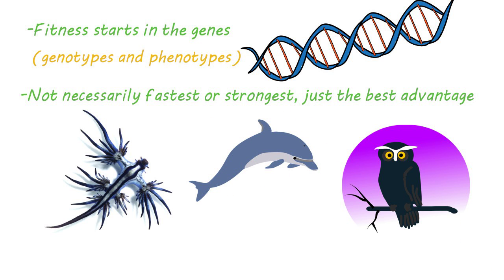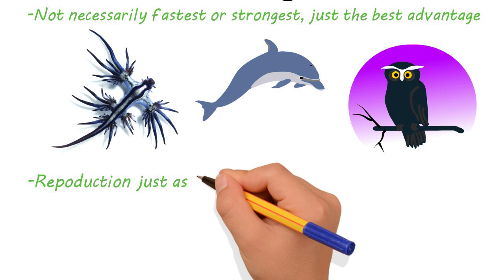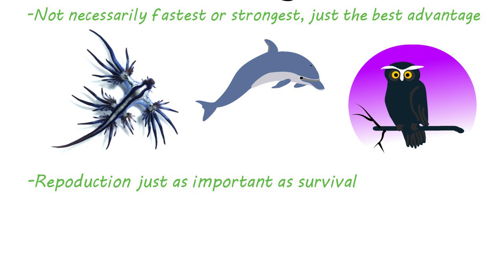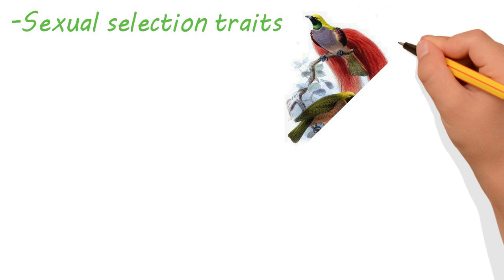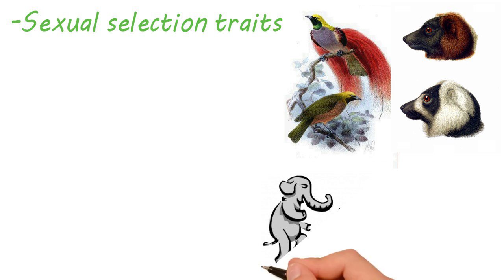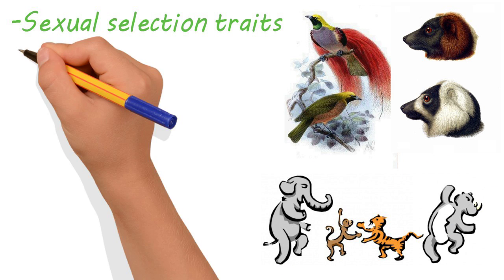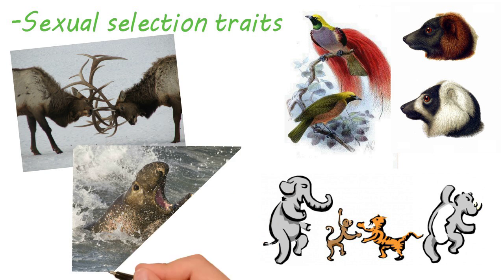But this is only half the story. The ability to reproduce and pass on those genes is just as important as survival. This is where sexual selection comes in. Examples of sexual selection traits include feather or coat color for attracting a mate, mating songs or dances, and even physical competition for mating rights.